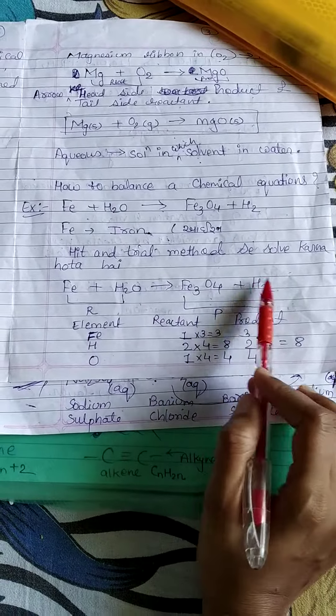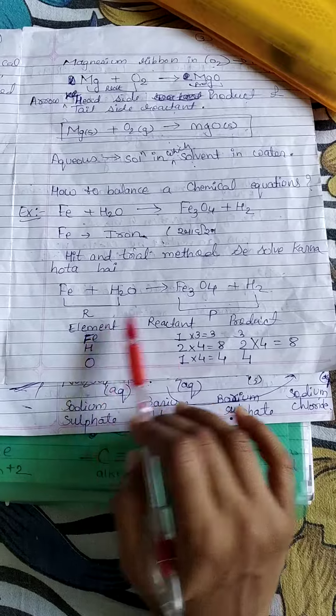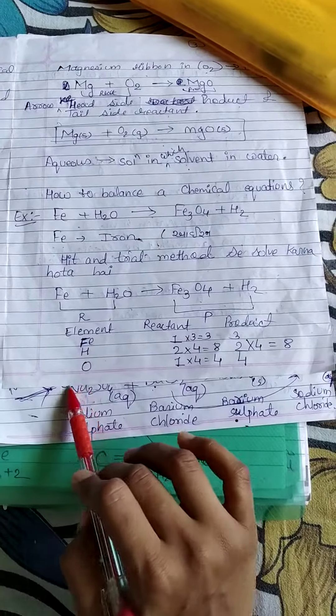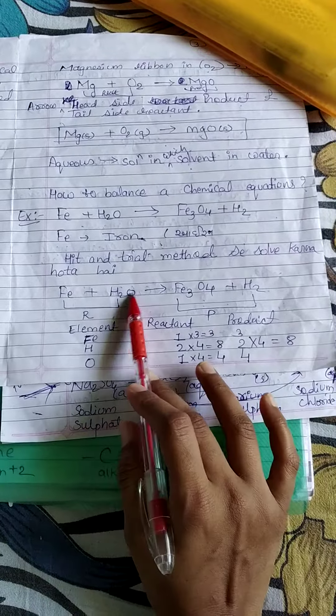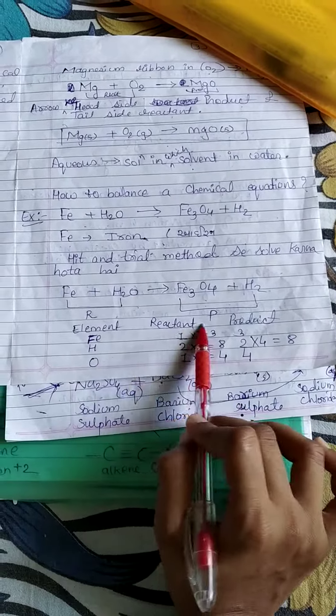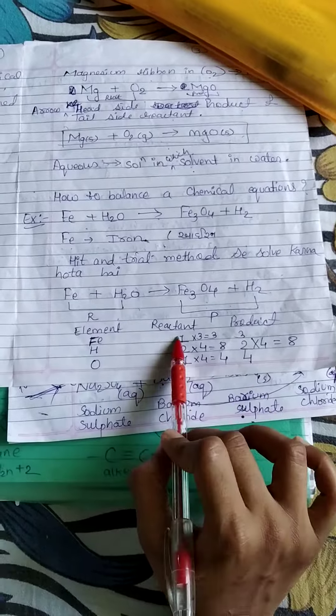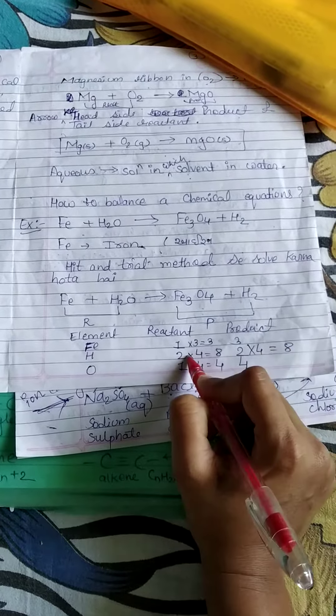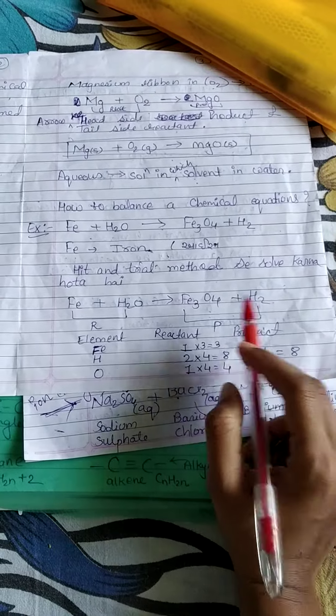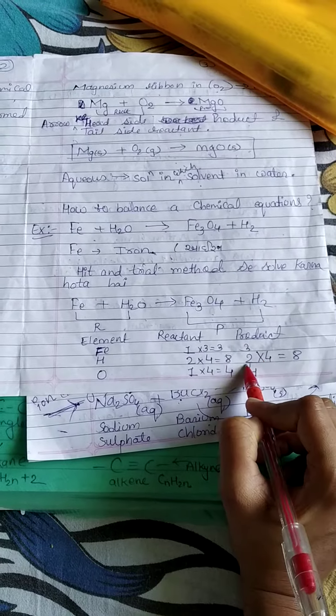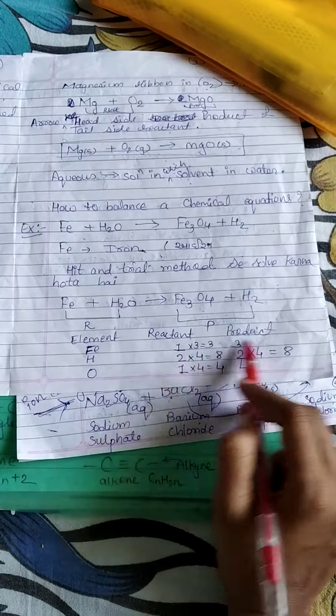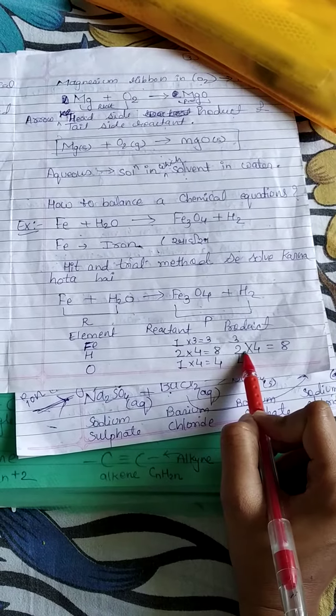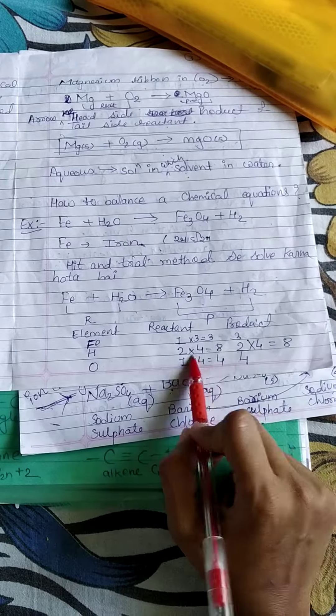Write the reactant and product first. On this side reactant and product, you write first which element. In this case Fe + H2O, so we have to use the reactants. In reactant it is Fe + H2O, and product is Fe3O4. Now it is 3, then we will multiply it by 3, so it will be 2.